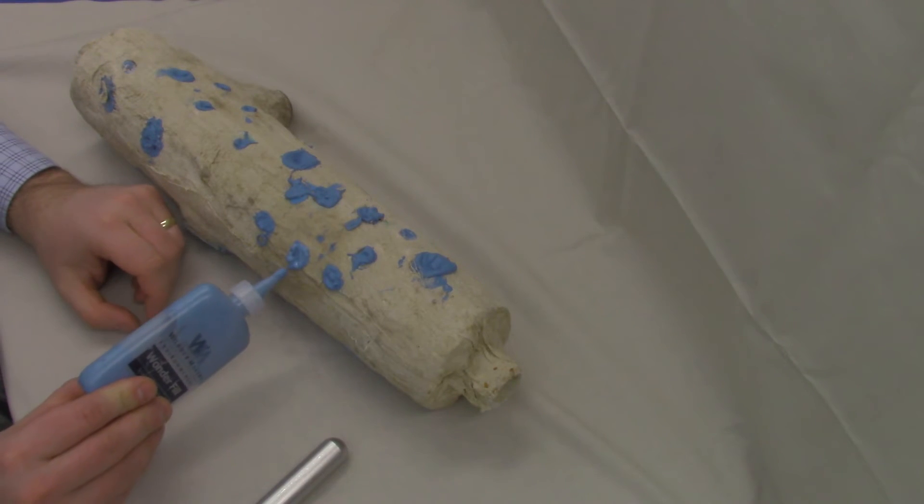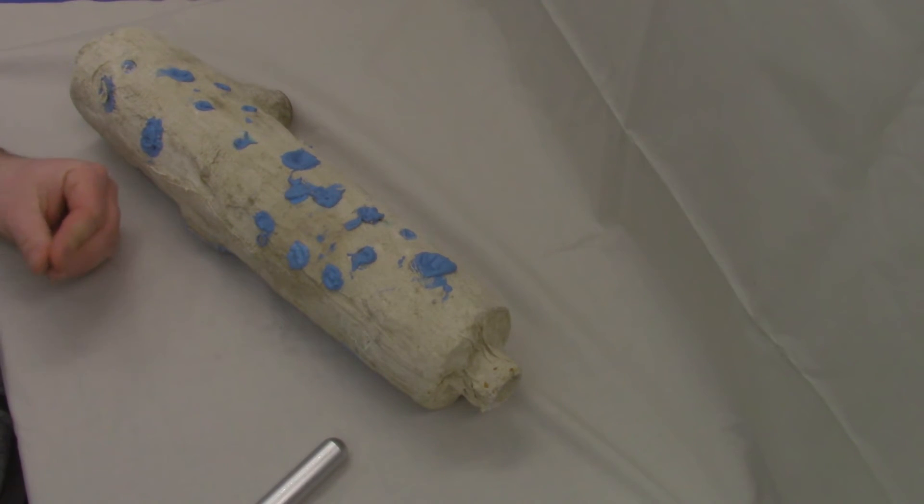Now, gravity is doing a little bit of work on it there, which is making it a little less pretty than it could be, but there you go. That will now dry and prevent any fiber release from that site and continue to allow the pipe wrap to do its job of insulating the pipe until it's eventually abated.